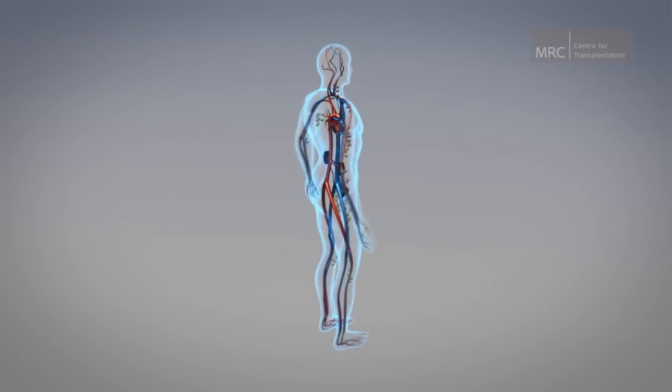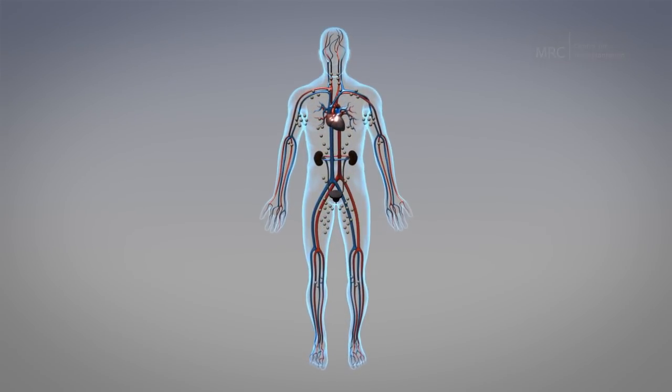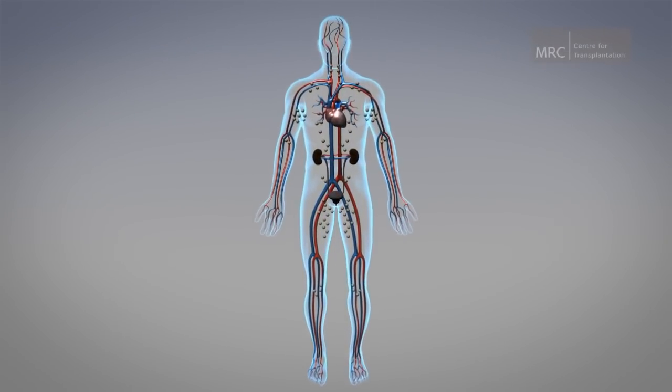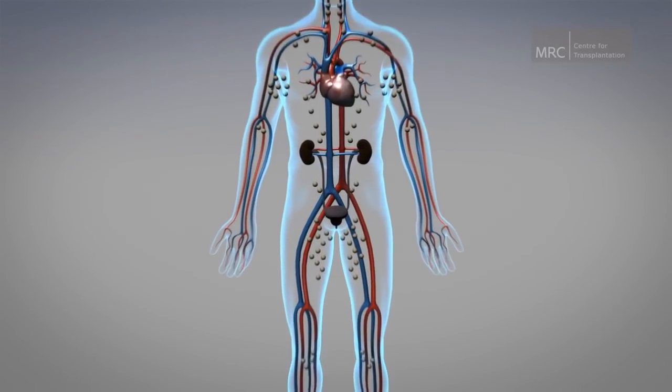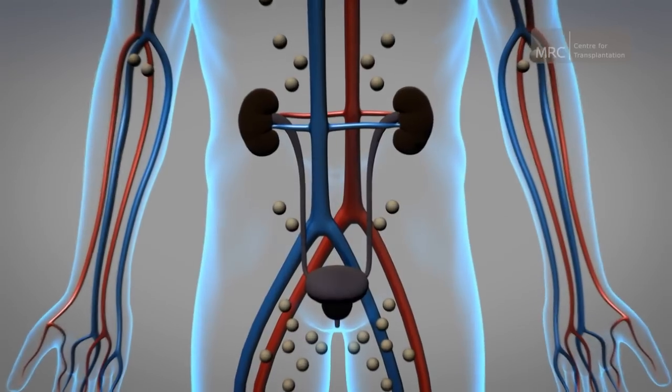The immune system has two parts: innate and adaptive. The innate is the first to detect when an organism does not belong to the body and directs the adaptive part to tackle the intruder. When a kidney transplant takes place...